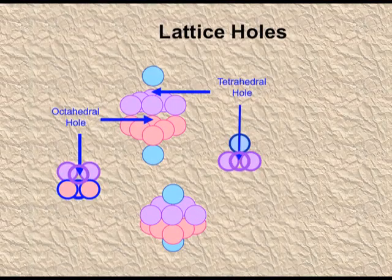The number of octahedral voids is equal to the number of spheres doing packing, whereas the number of tetrahedral voids is double the number of atoms undergoing packing. Even after the closest packing, some space is not utilized by the atoms and voids are left. I hope the packing in one, two, and three dimensions, as well as the voids — also called holes or interstitial spaces — are all clear to you.